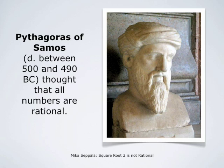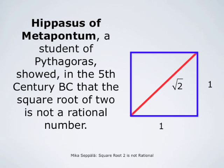The great Greek mathematician Pythagoras of Samos lived about 70 or 80 years and he died between 500 and 490 before Christ. He thought that all numbers are rational, that is, all distances can be expressed as ratios of two integers. He also proved the famous theorem of Pythagoras, which gives a relationship between the lengths of the sides of a right-angled triangle.